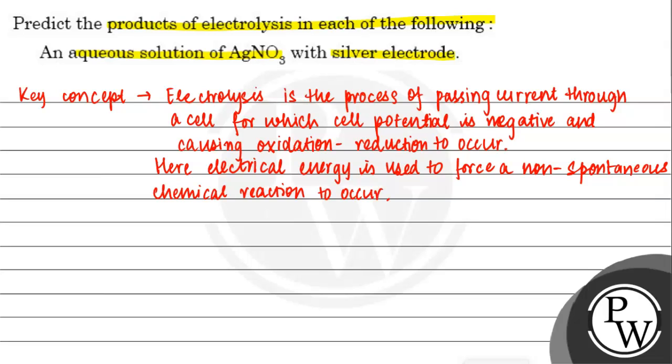Now we will solve the question. An aqueous solution of AgNO3 with silver electrode - products of electrolysis with silver electrode.